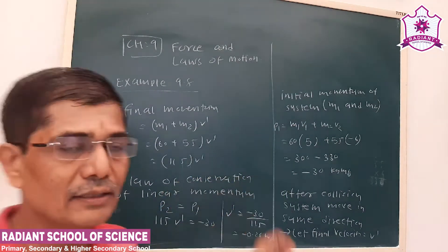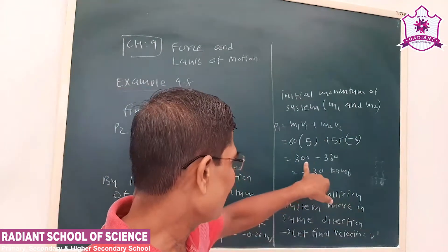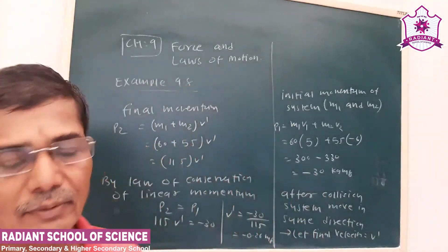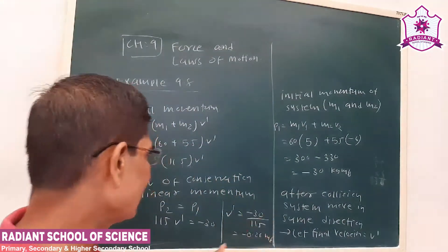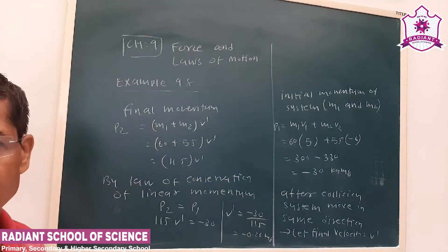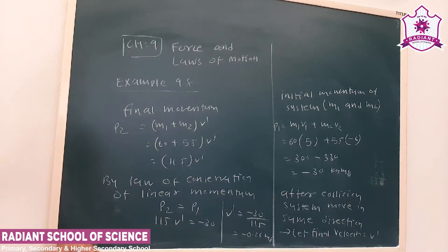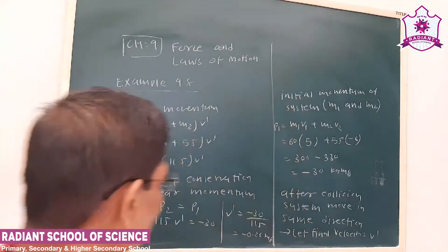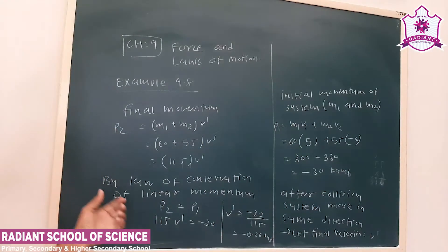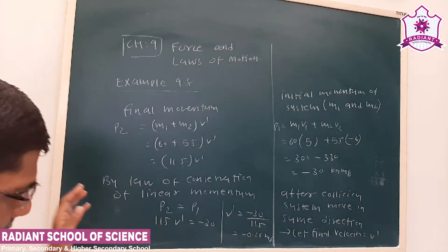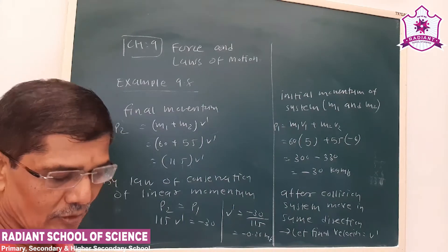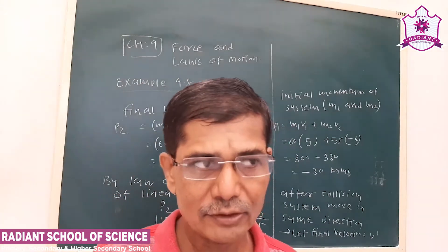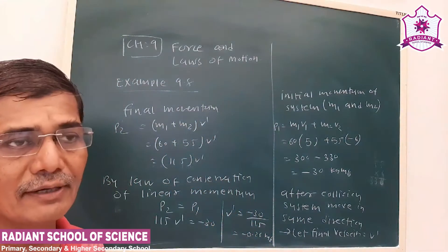Initially both were moving in opposite directions, so the momentum of the first particle was taken as positive and the second as negative. After collision they move in the same direction with a common velocity V-dash. By the law of conservation of linear momentum, P2 equals P1. Using this we obtained the value of the final velocity. This completes our example part.